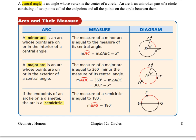A central angle is an angle whose vertex is the center of a circle. You can see in our diagram right here we've got angle ABC. Because B is the center of the circle, we can call angle ABC a central angle. An arc is an unbroken part of a circle consisting of two points, like A and C, and all of the points on the circle between them. So we have arc AC on our circle with center B, and the measure of arc AC is equal to the measure of angle ABC, which equals X degrees.